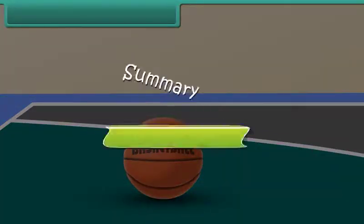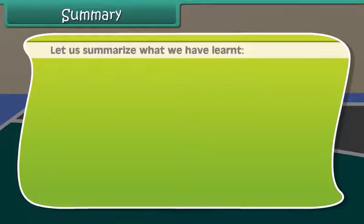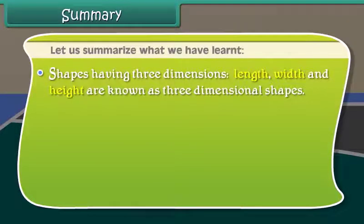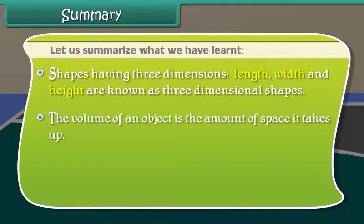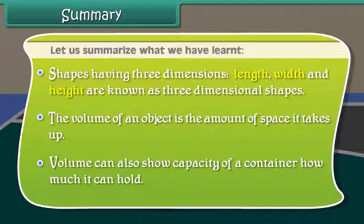Summary. Let us summarize what we have learned. Shapes having three dimensions: length, width and height are known as three-dimensional shapes. The volume of an object is the amount of space it takes up. Volume can also show capacity of a container, how much it can hold.